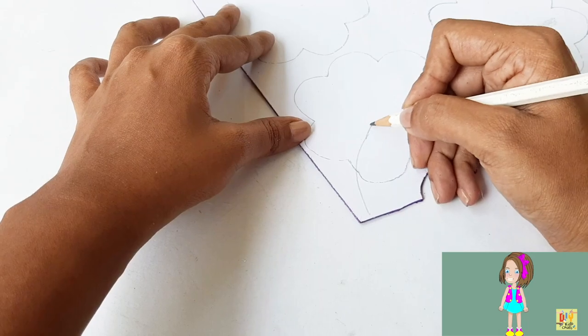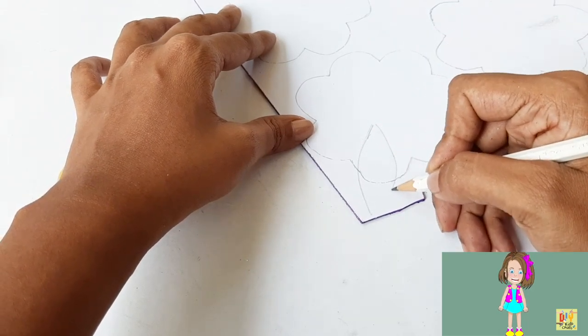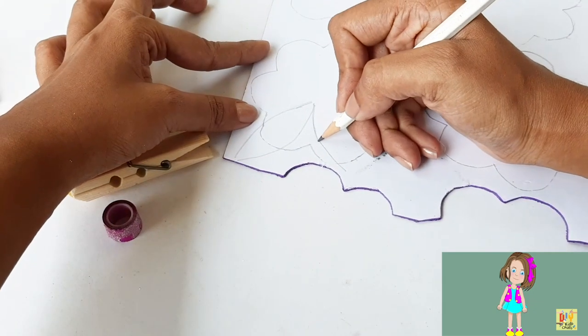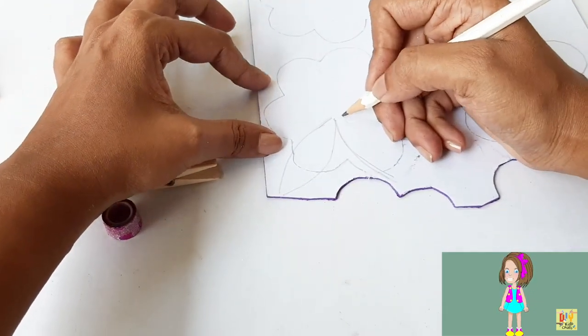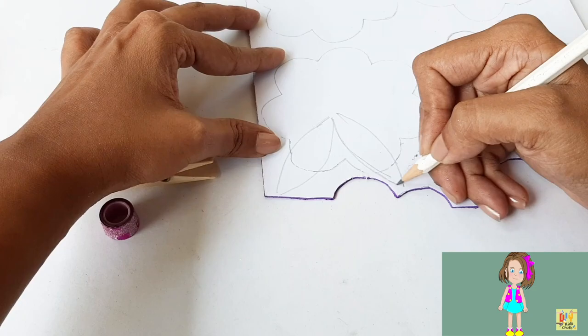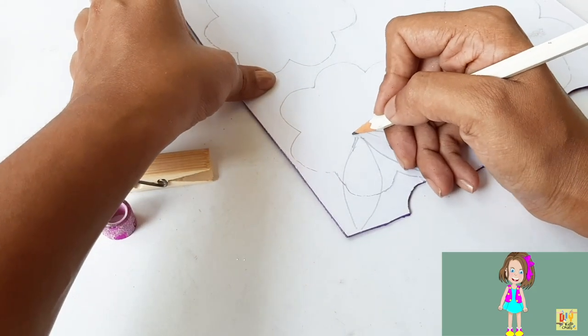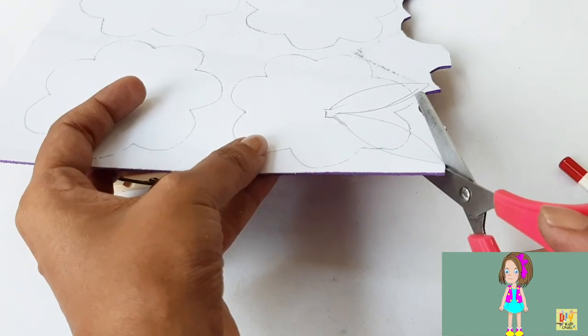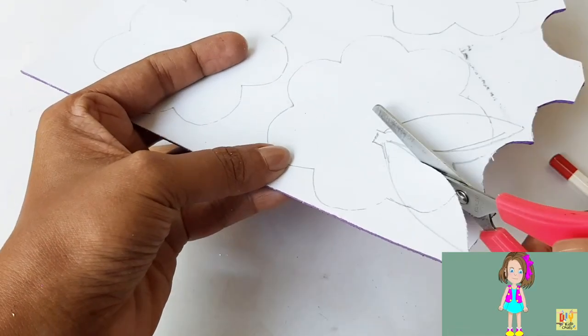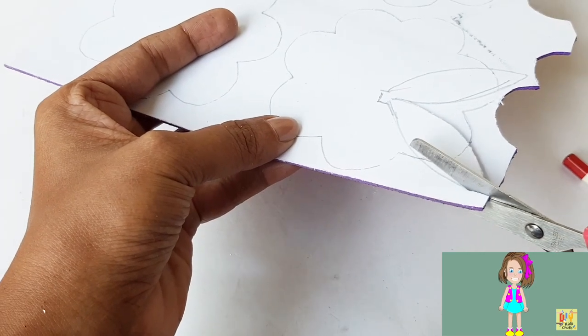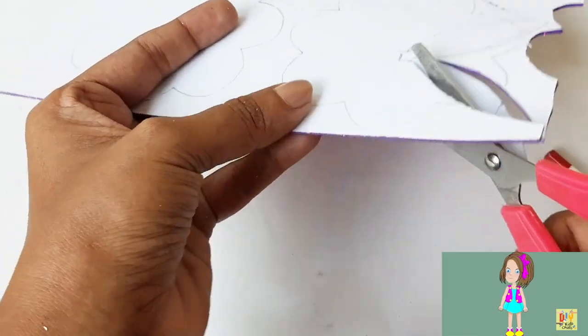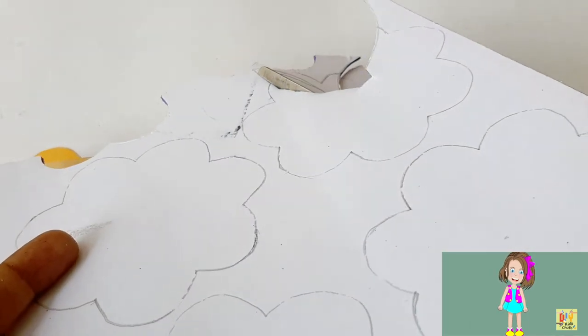Draw our mermaid tail, like this. If you don't have a picture of it, you can search on the internet so that you can have the shape of a mermaid's tail. Then let's cut it out.